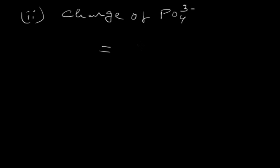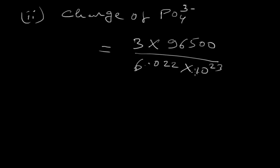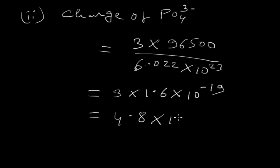The formula is the same: n × F/Na. Here n is 3 because the charge of phosphate ion is -3, and F is 96500 divided by 6.022 × 10²³. The value is 3 × 1.6 × 10⁻¹⁹ coulomb, which is 4.8 × 10⁻¹⁹ coulomb.